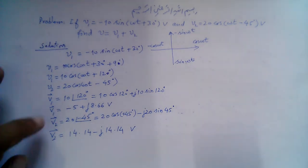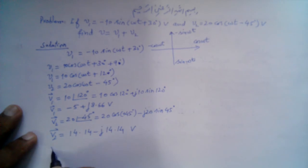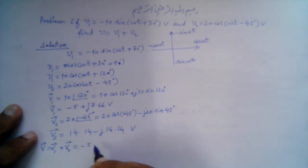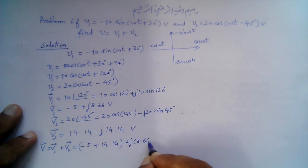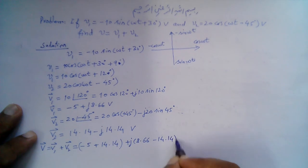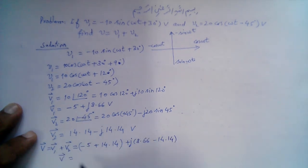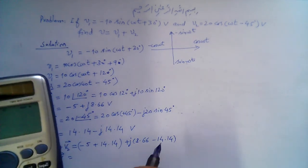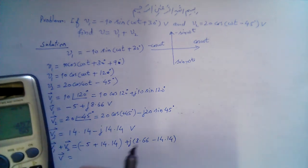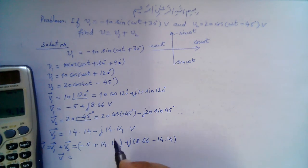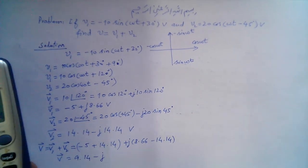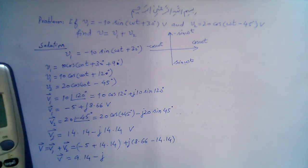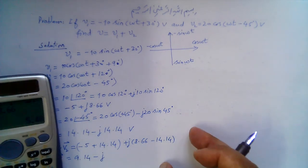We have both V1 and V2 in rectangular form, so we can add them. V = V1 + V2: the real part is −5 + 14.14 = 9.14, and the imaginary part is −j14.14 + j8.66 = −j5.48. So V = 9.14 − j5.48 volts.